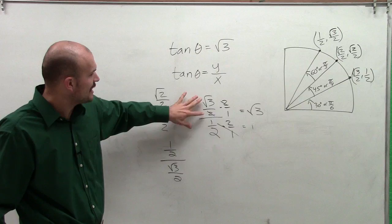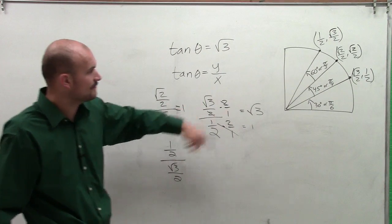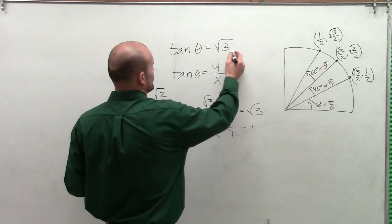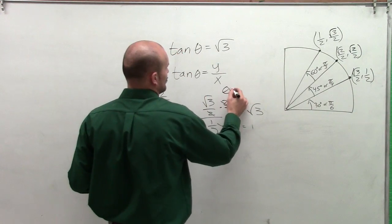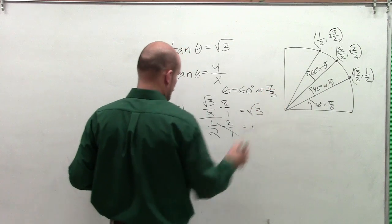And when I look at this I say, when is my y coordinate square root of 3 over 2 and my x coordinate 1 half? And we notice that's going to be 60 degrees. So therefore, I can just write theta equals 60 degrees or pi over 3 radians.